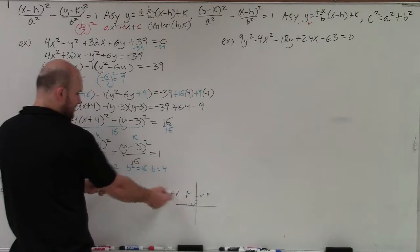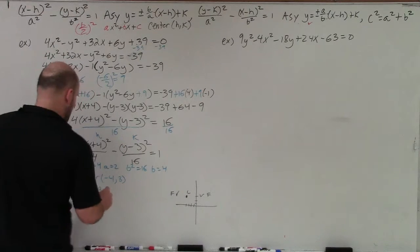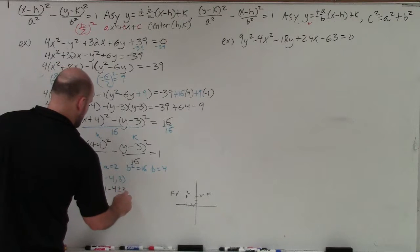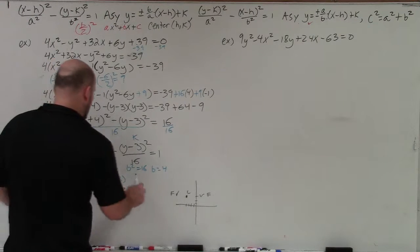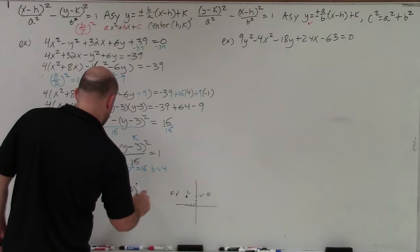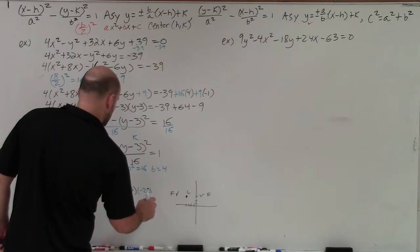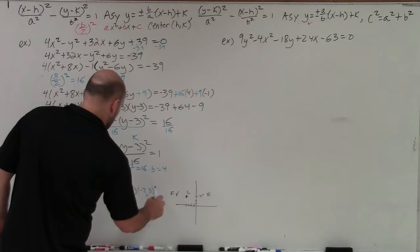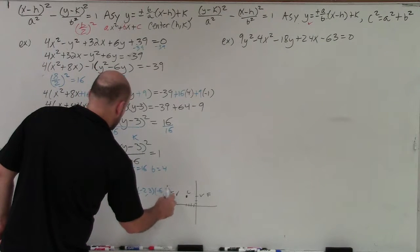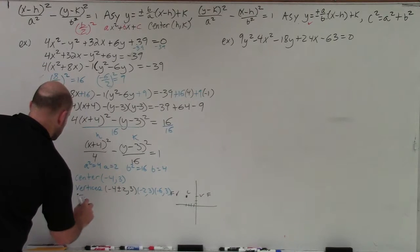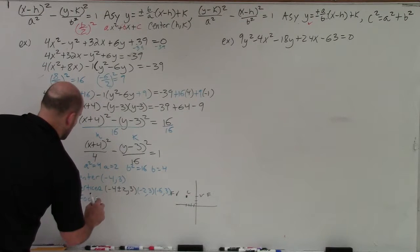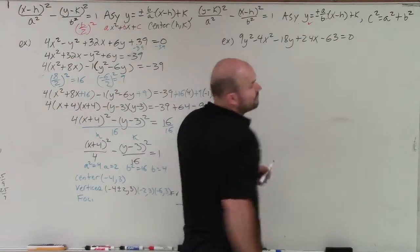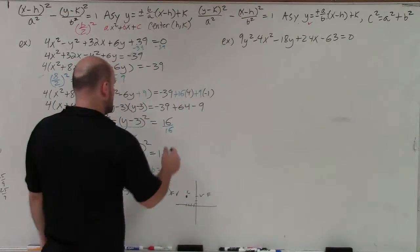The vertices change the x-coordinate: negative 4 plus or minus a, which is 2, gives us (−2, 3) and (−6, 3). The foci follow the same pattern, except they use the value c, which I don't know yet. So I need to go back to the formula c² = a² + b² to determine c.